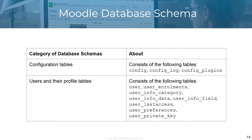You also have the users and their profile tables, which consist of information regarding users. You have the user table, the user enrollments table — which contains information about the courses a user is enrolled in — user info category, info data, last access, IP address, and such things.